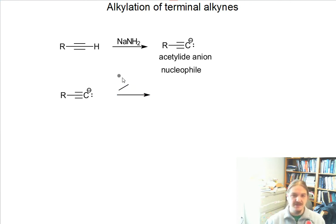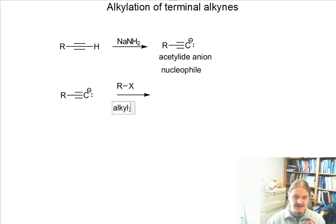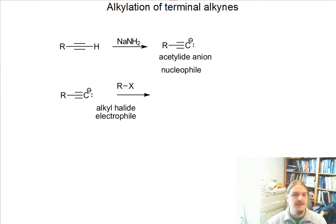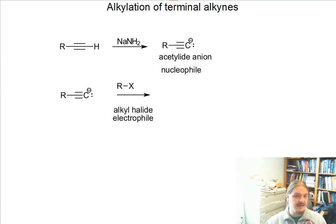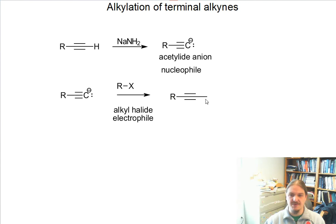So that means, if we were to take this acetylide anion and react it with an alkyl halide electrophile, we might expect a nucleophilic substitution reaction to happen, provided all of the other sorts of conditions that lend themselves to nucleophilic substitution reactions also are true. And we'll talk about some of those in a minute.